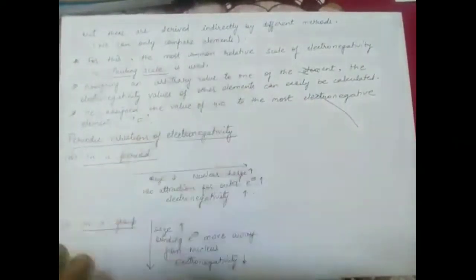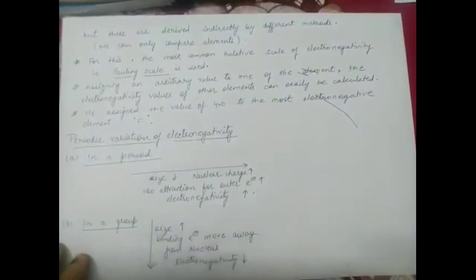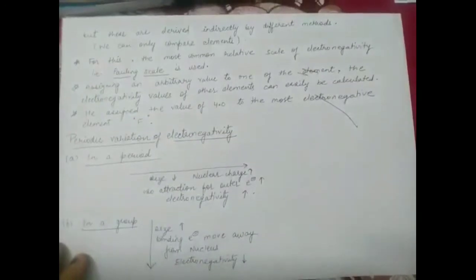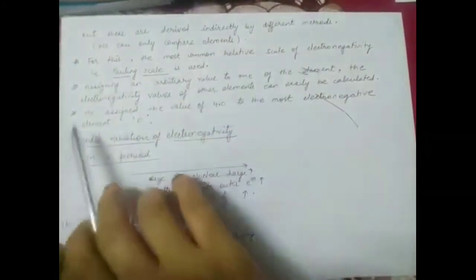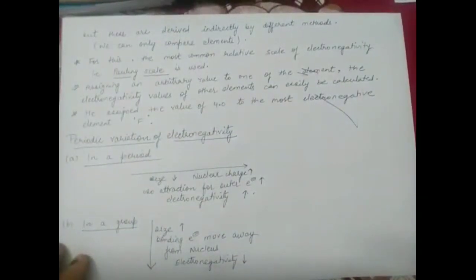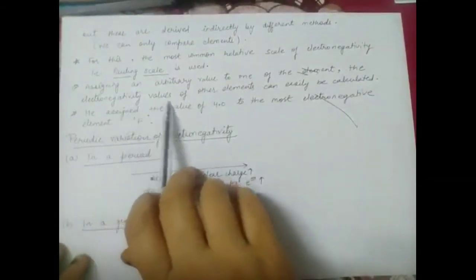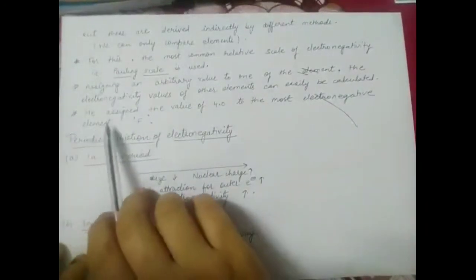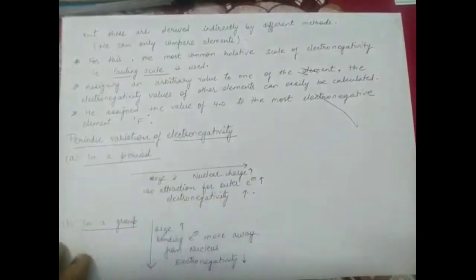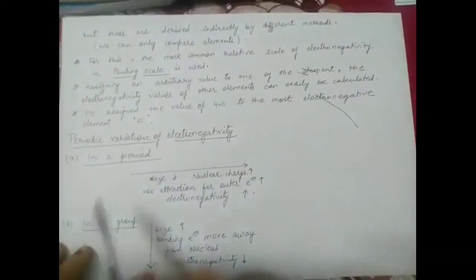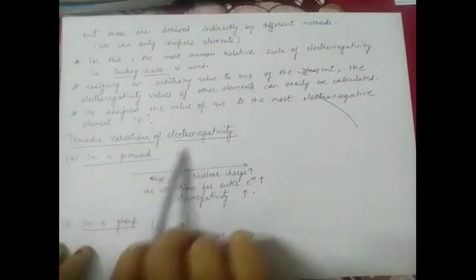Electronegativity values are derived indirectly by different methods. The most common scale is the Pauling scale, on which we compare elements by assigning an arbitrary value to one element and calculating others relative to it. Pauling assigned the value of 4.0 to fluorine, the most electronegative element in the entire periodic table, because of its small size and high nuclear charge.